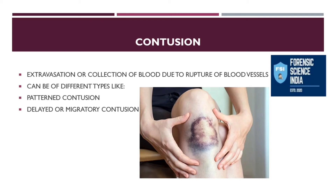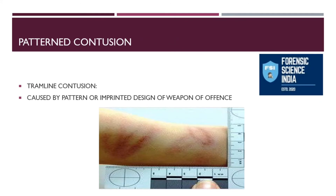Patterned contusions are caused by the patterned or imprinted design of the weapon of offense. The main medical legal significance is to understand what kind of weapon was used, the angle of attack, the direction of attack, and how much force was inflicted. A very important example is a tramline contusion, which is very common in cases of custodial death where lathi charges are done by the police.